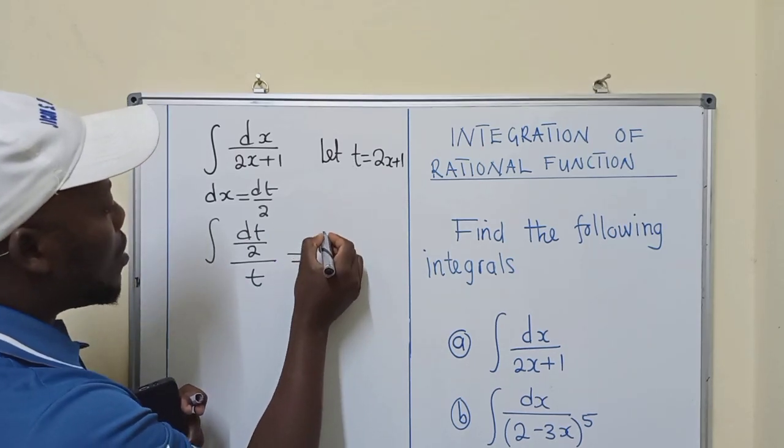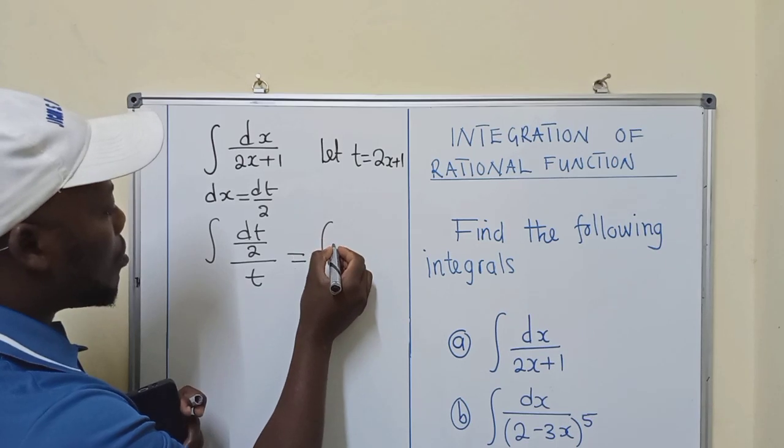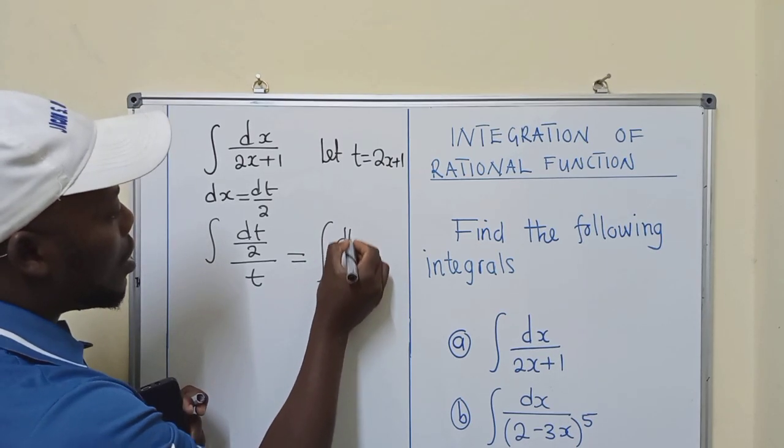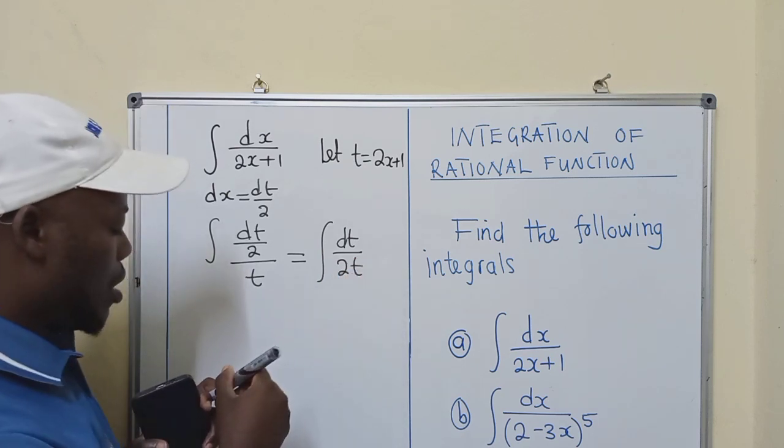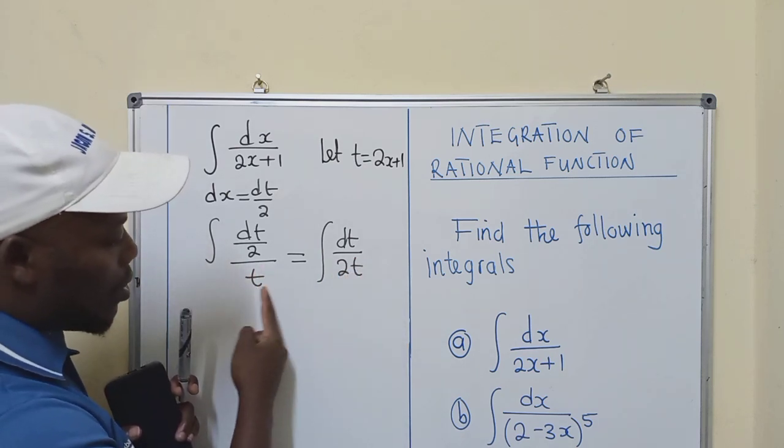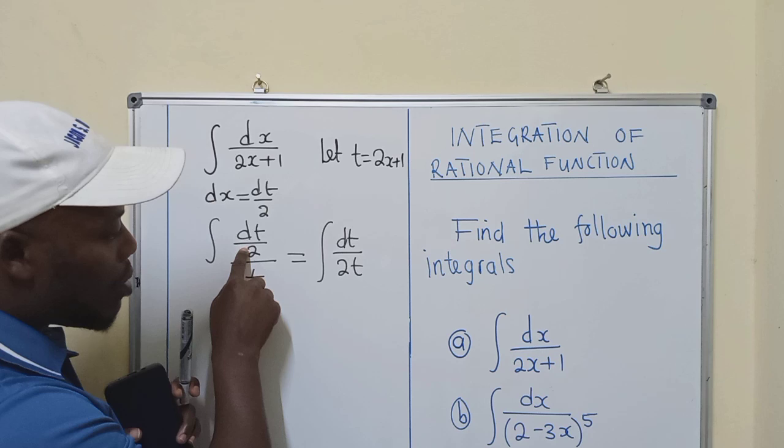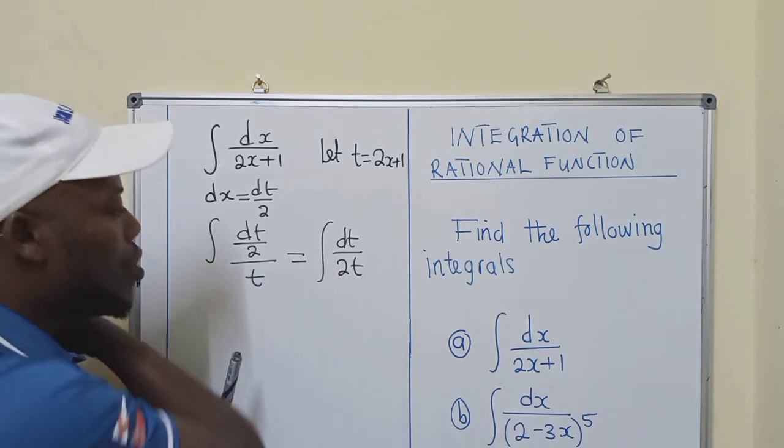So we can simplify here. We shall have dt over 2t. So we are dividing by this. Remember, so this will be multiplied by this. And this is what we're going to have.